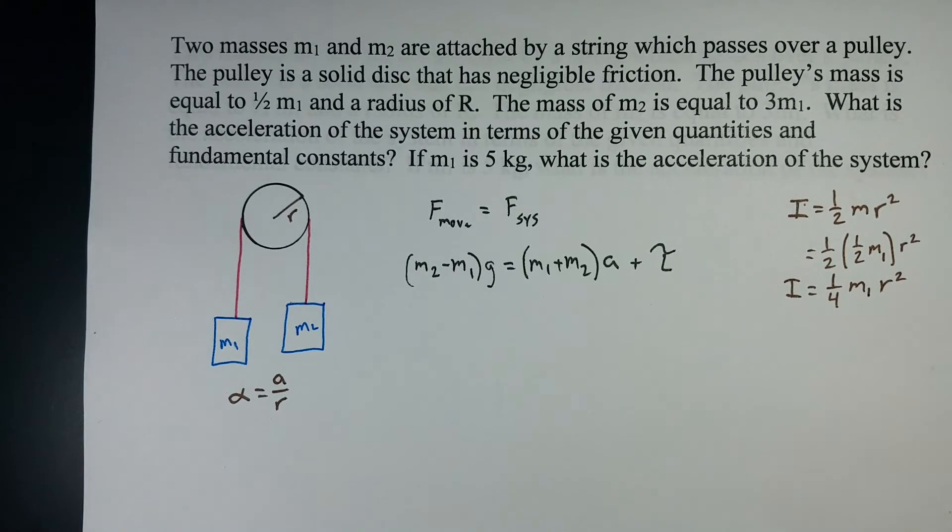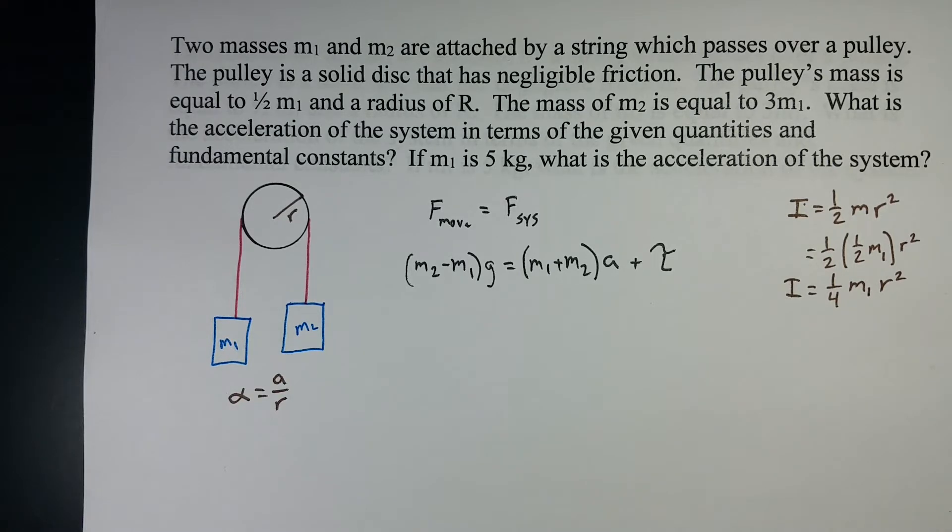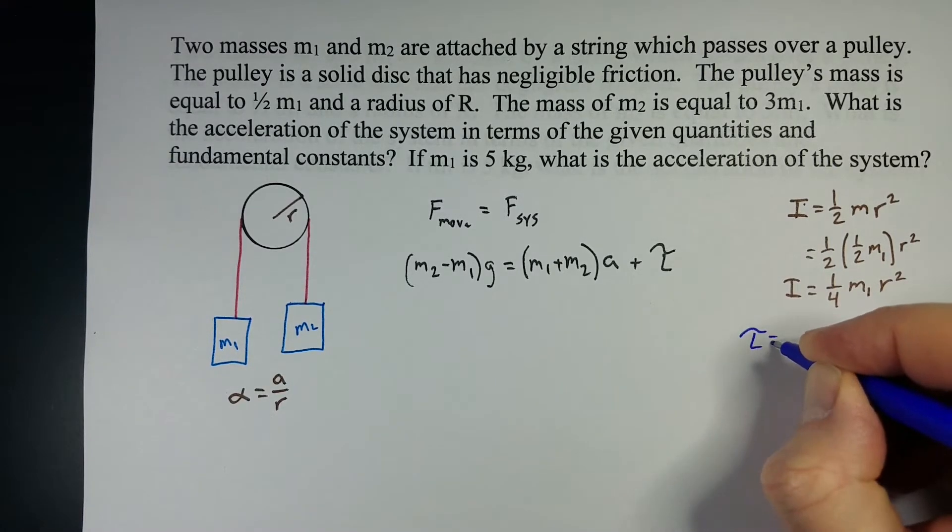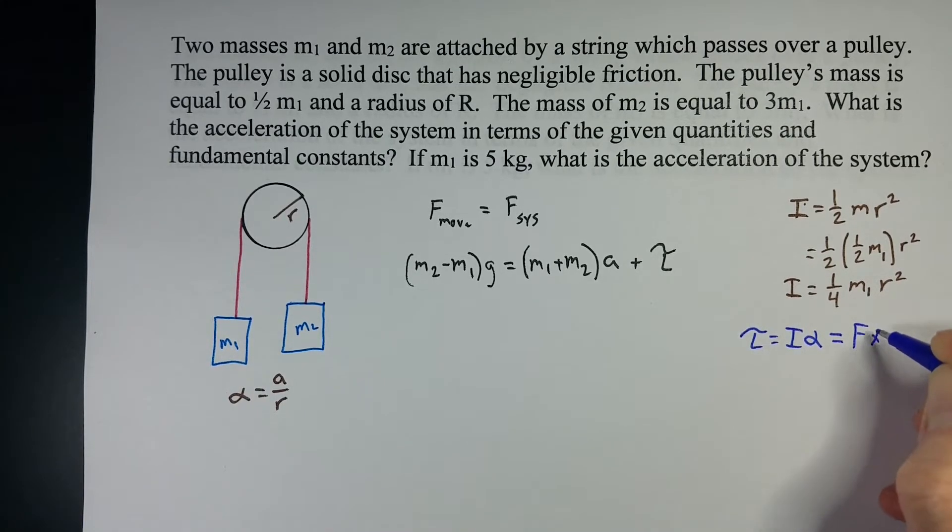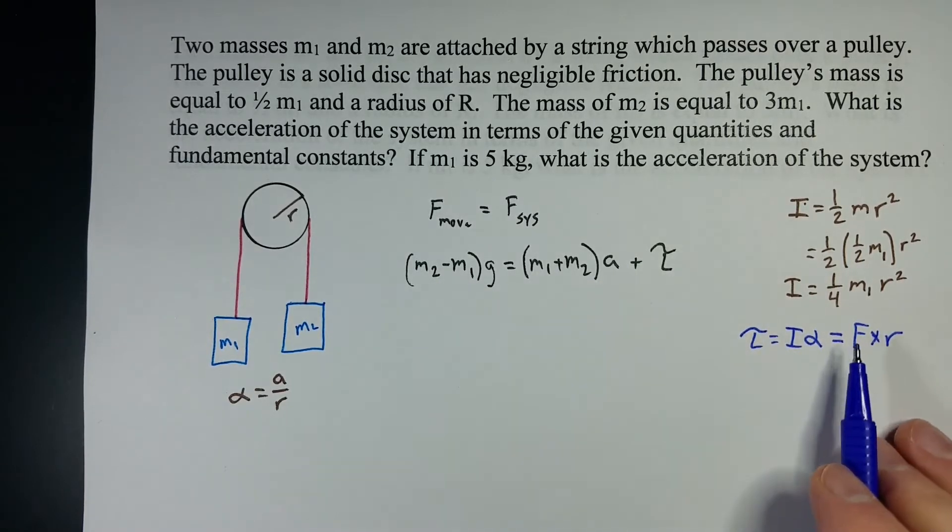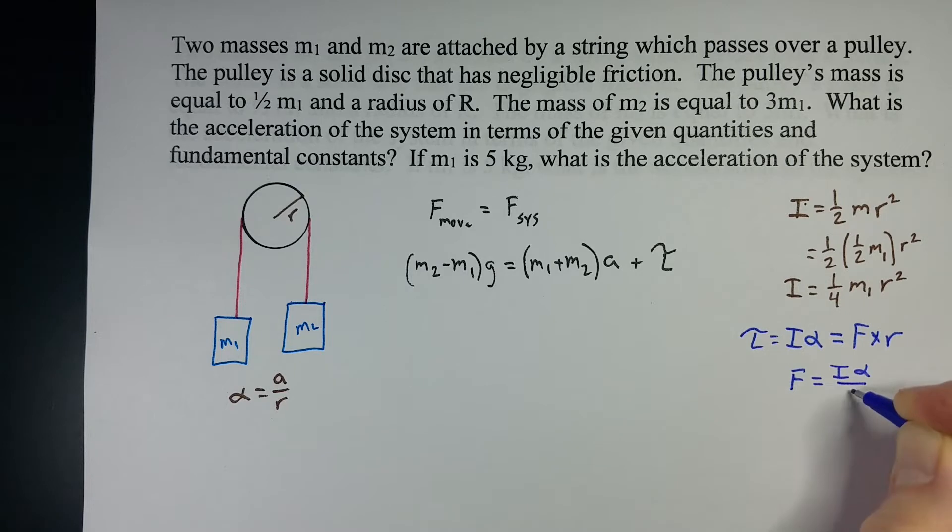We've still got to take care of this torque term. Torque is equal to I alpha, or it can be equal to F cross R. I'm actually going to do a little algebra manipulation here. I want this in terms of F, because everything else is a force. So if I solve for F, F equals I alpha over R.